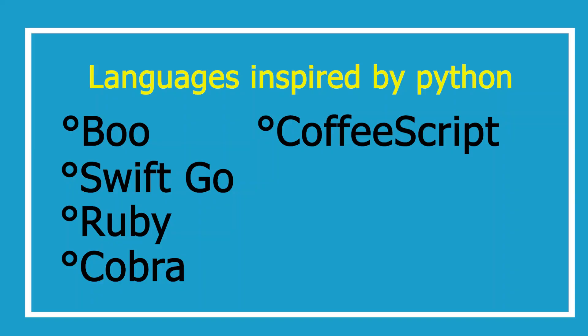Python has also been used to develop other programming languages like Boo and Swift. Those programming languages borrowed ideas from Python — the basic object-oriented syntax. The way you code in Python, you'll find similarities in Swift. New programming languages such as Boo, Swift, and CoffeeScript have used Python's design and module architecture as inspiration behind their development.